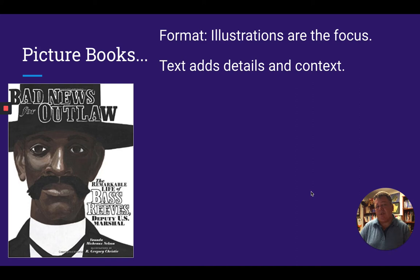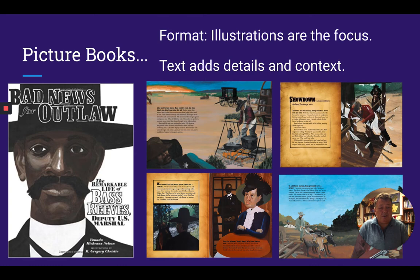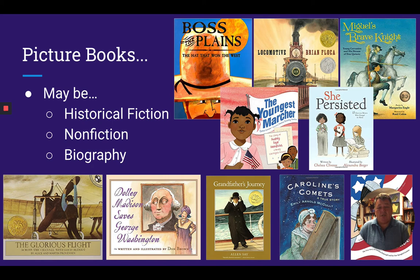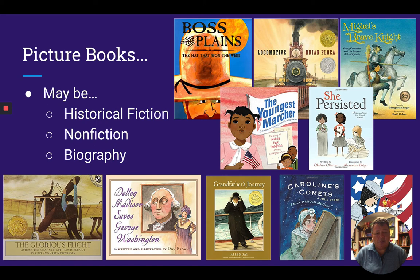Now let's talk about formats. Picture books are probably the most common because they're the most fun to look at — the illustrations are the whole delivery method of the book, so you get a lot of details and content from them. The illustrators are fabulous. Here's a great picture book about Bass Reeves, a U.S. Deputy Marshal who was black and a former slave. Picture books can be a wide variety of genres: historical fiction like Boss of the Plains about the creation of the Stetson hat, biographies about Cervantes, or books about women who helped sew the U.S. flag during the Revolutionary War.